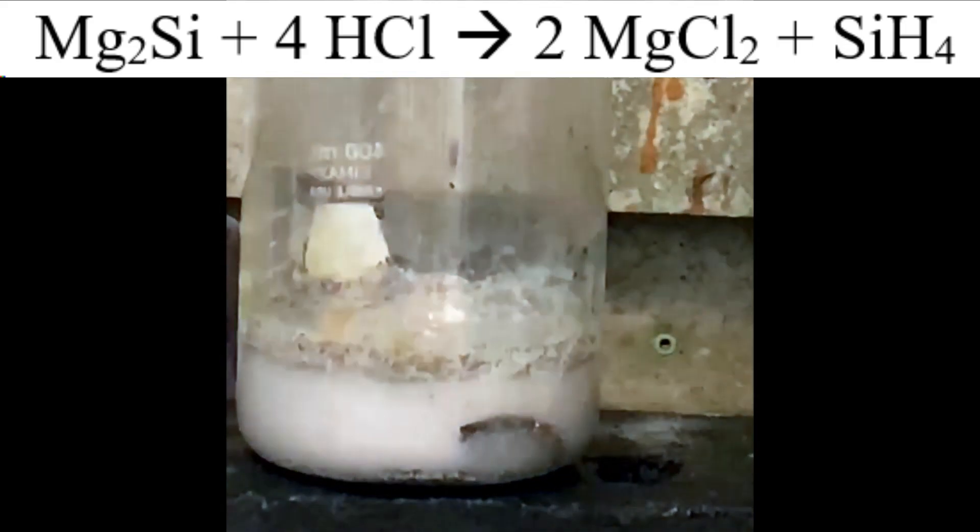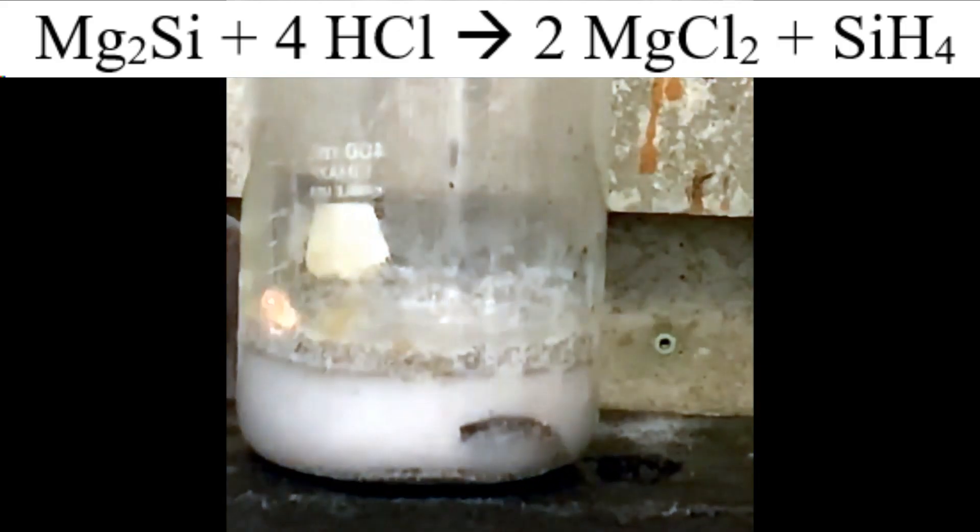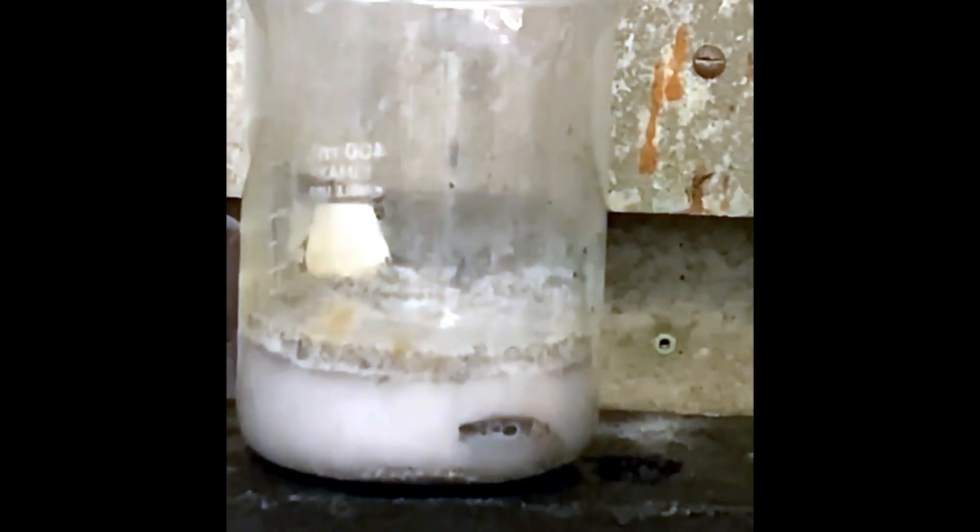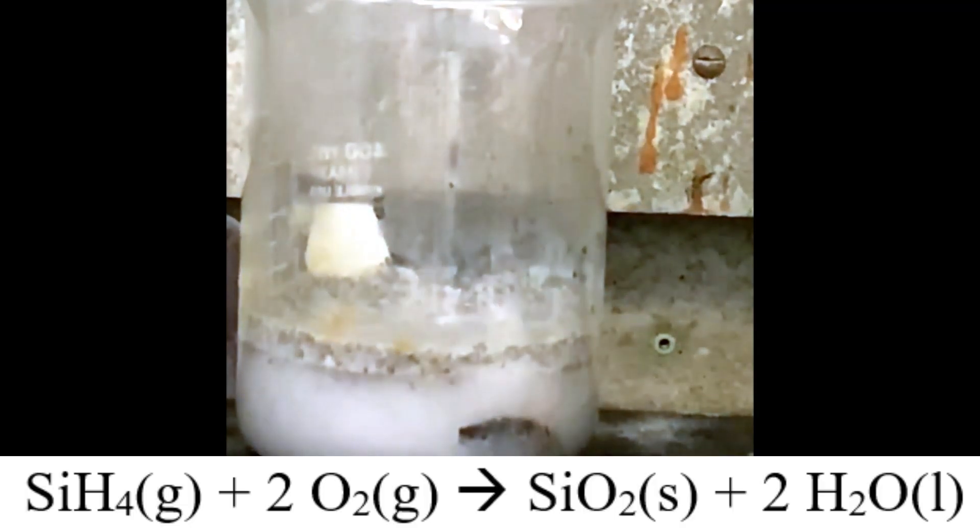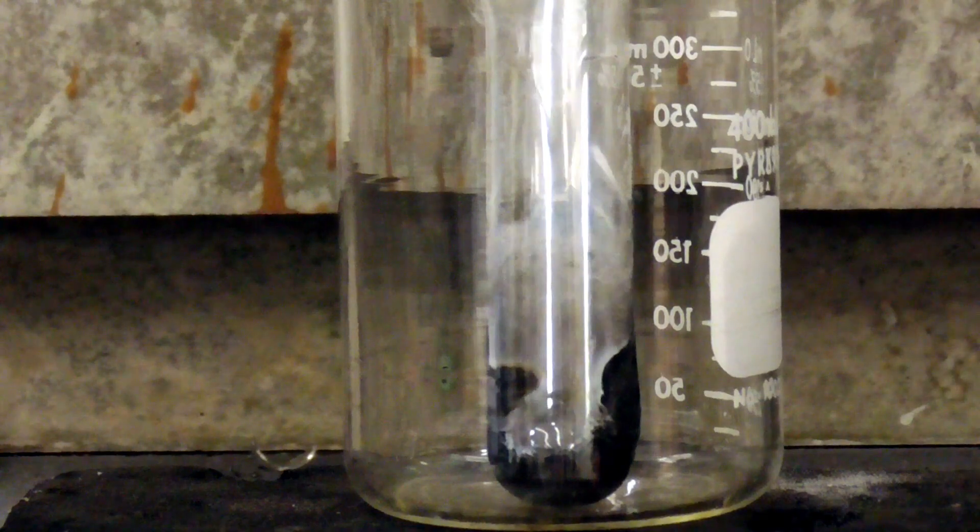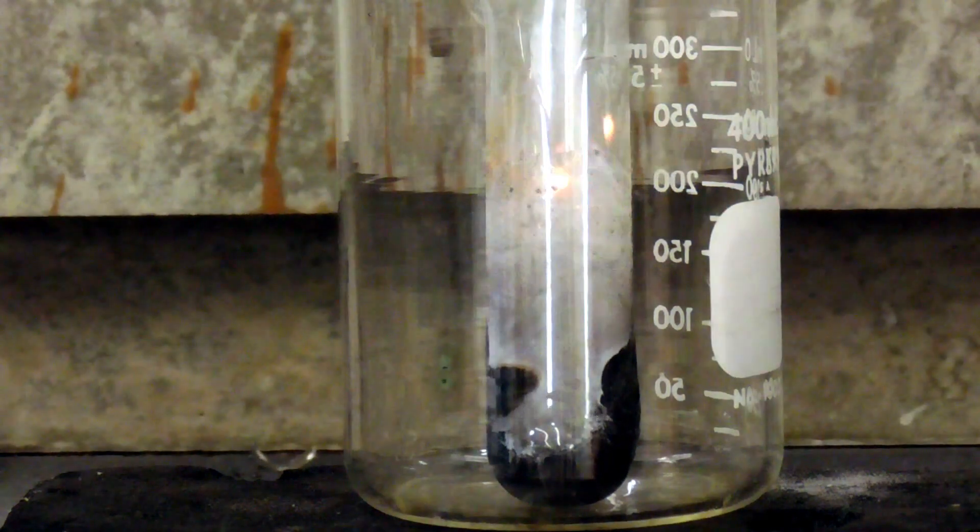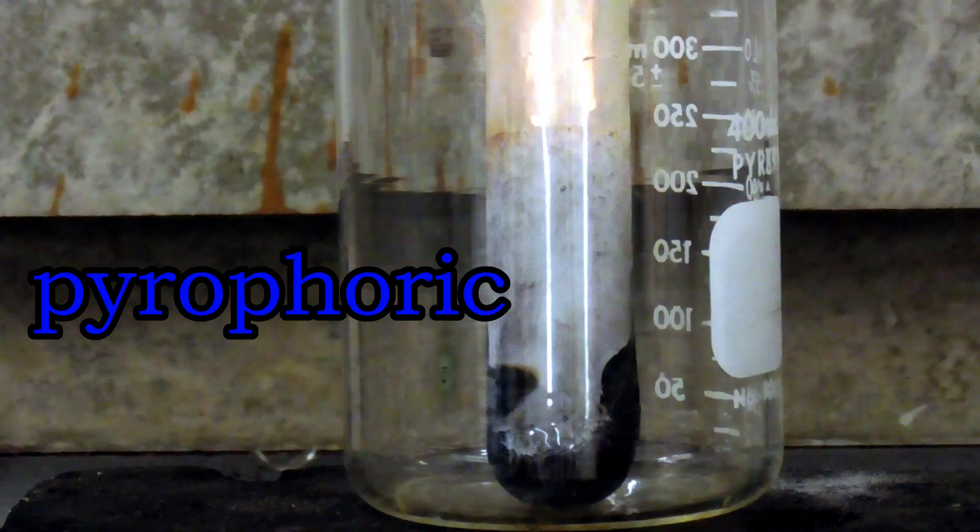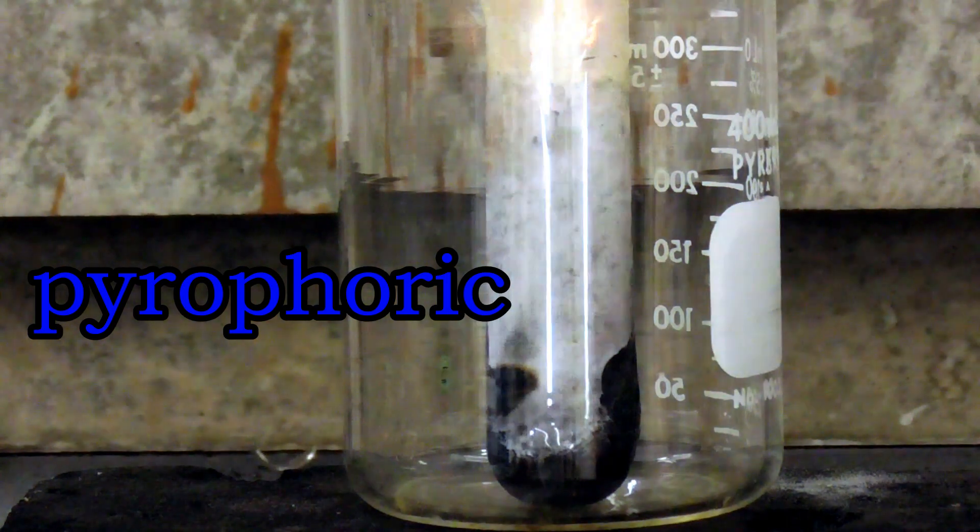Interestingly though, silane gas does not need a source of ignition to burst into flame. It spontaneously reacts with oxygen. The chemical reaction that drives this flammable process is seen below. Substances like silane gas, which spontaneously ignite when exposed to the air, are said to be pyrophoric. I think it's really neat that a pyrophoric substance can be made from something as simple as sand.